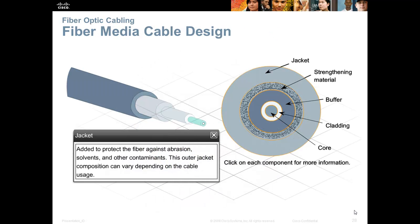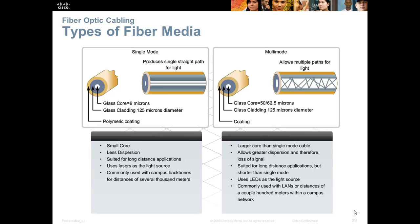Fiber optic uses light pulses and because of that, it is not susceptible to the electromagnetic interference associated with copper cable. A cross-section of the fiber shows a jacket, strengthening material, buffer, cladding, and the core — which is very thin glass or silica. Single-mode fiber has a very small core of about 9 microns, which means less dispersion of light, enabling greater distances and potentially higher speeds. Single-mode typically uses laser light as its source.